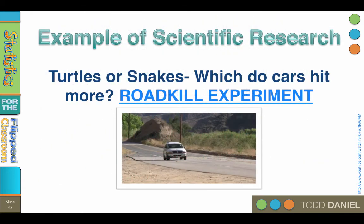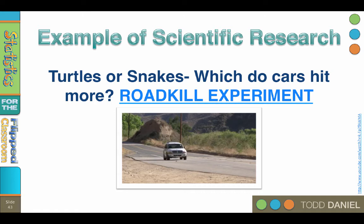We could begin by looking at the scientific method in practice. In this section, you can find a link to the roadkill experiment, in which researcher Mark Rober tested whether cars were more likely to hit turtles or snakes. He used a rubber turtle, a rubber snake, a rubber tarantula, and a leaf in his experiment. The video is both entertaining and a little bit disturbing — there are a small number of sociopaths on our roadways who will go out of their way to run over turtles, even if they are rubber. As you watch the video, try to identify the independent variables, the dependent variable, experimental group, and control group.